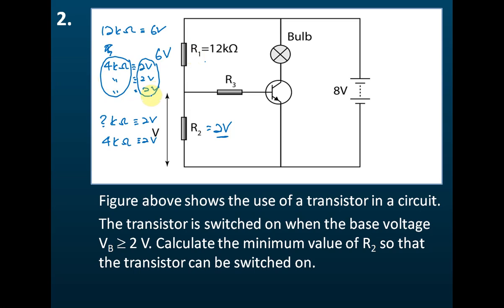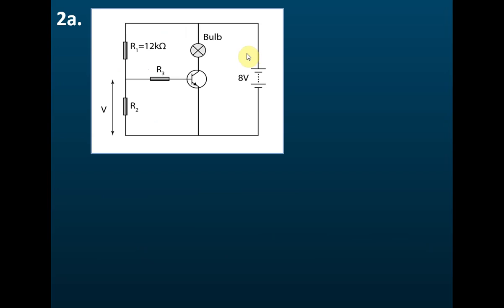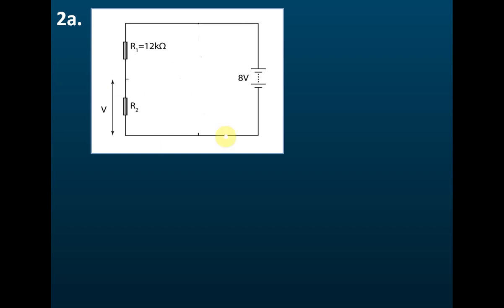The concept of a potential divider may be too abstract for some students, so let me introduce an alternative method which is much easier. If you encounter problems where you need to find the potential difference across two resistors acting as a potential divider, what you can do is assume that all other circuit elements in the middle do not exist — erase them to reduce it to a simple series circuit.